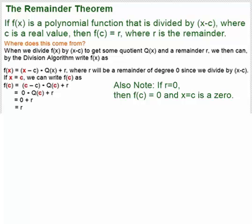And here's how we get it from the division algorithm. Let's say we divide f of x by x minus c. And we get some answer q of x, that's our quotient, and some remainder r. By the division algorithm, we can rewrite f of x as x minus c times q of x plus r.